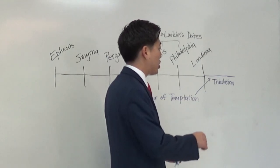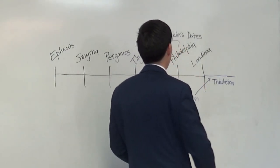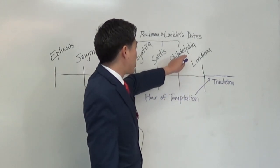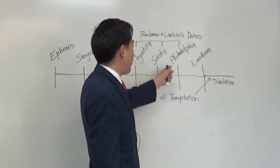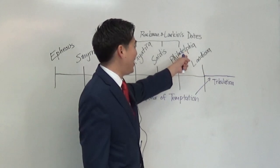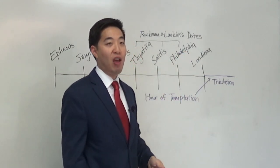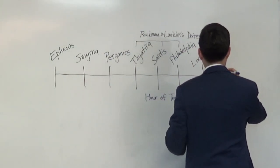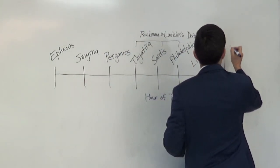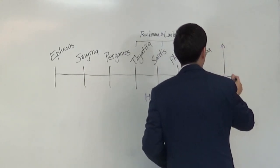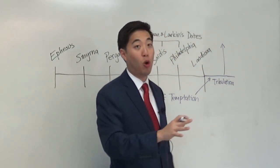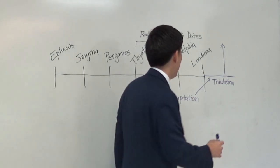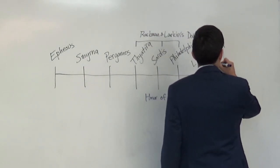Now, the doctrinal application for this could be that because these tribulation saints of this Philadelphia region were found faithful and they were patient, that they could be raptured before God actually spreads out His seven vials that judges the whole world. So that could also be another explanation. Which is very true.